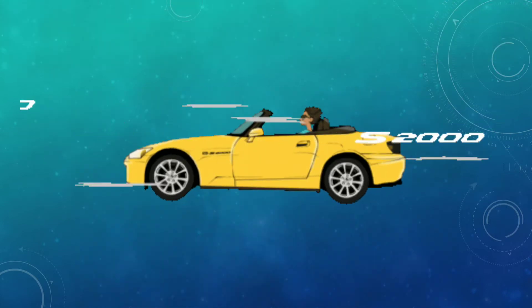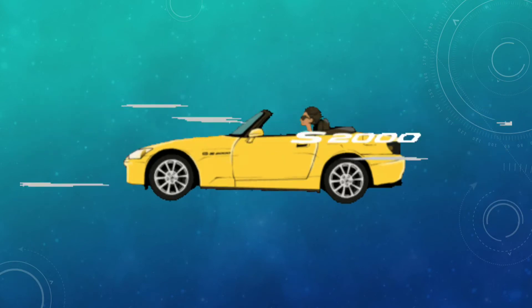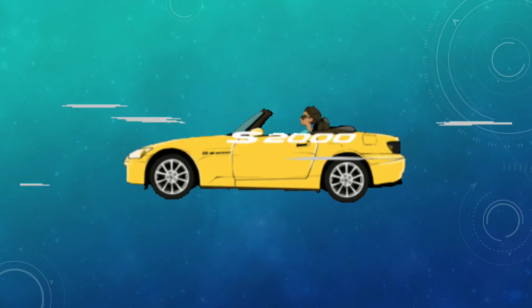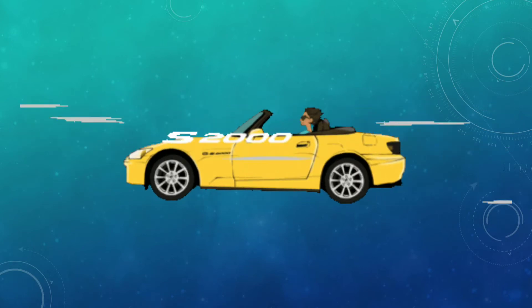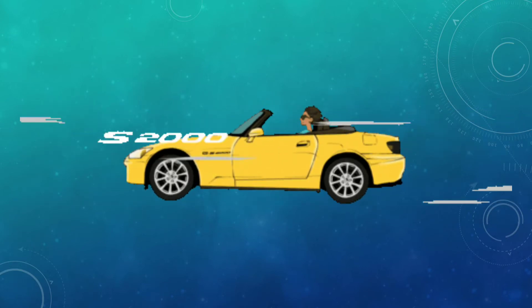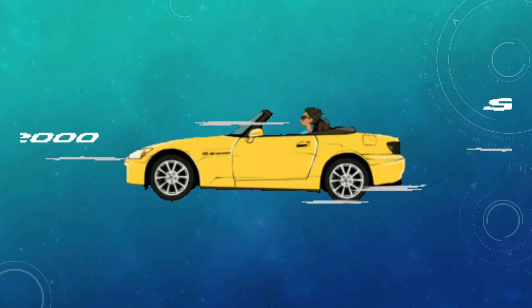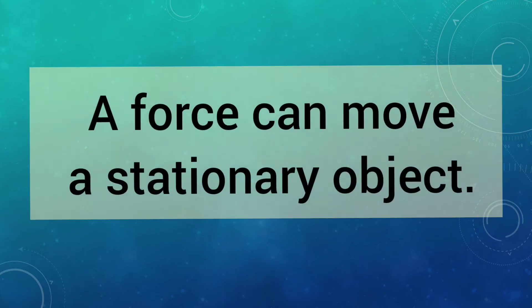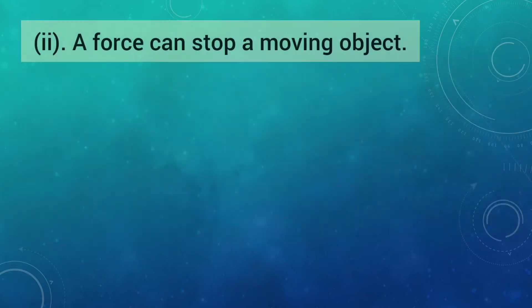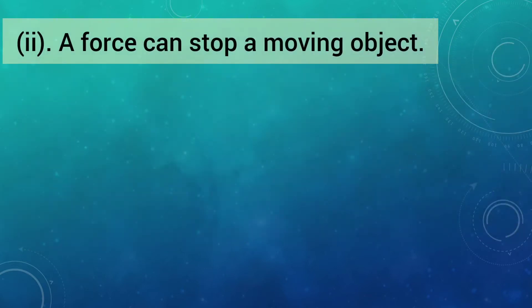Similarly, the force of an engine makes a stationary car move. With these examples, you understood that a force can move a stationary object. Now, force can stop a moving body.